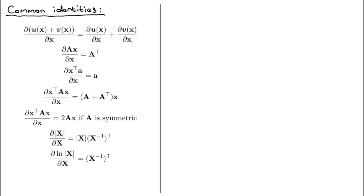By following all those definitions, you can start to derive different identities. Someone else has already done this, and in the next slide I'll point you to where to find them. Here I highlight some common identities I've used. Some are obvious because they're similar to the scalar case, but technically you still need to go through the derivation to confirm they're correct — and as mentioned, the order of terms can be tricky. The first identity says that if you have two functions u and v dependent on x, the partial derivative of their sum is just the sum of the individual partial derivatives.